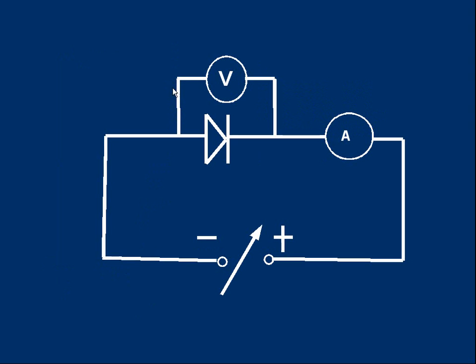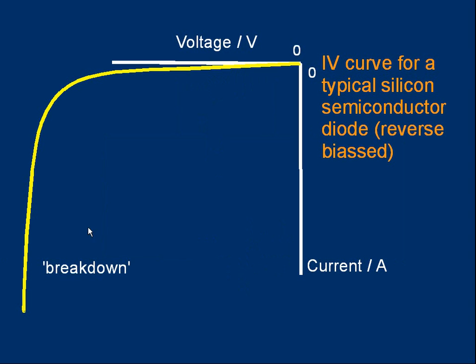If I want to do the reverse bias measurement, all I do is flip the power supply, just reconnect the leads the other way around. And now the diode is reverse biased and I can measure the voltage and current as I wind up the power supply, plot the graph, and we get something like this.